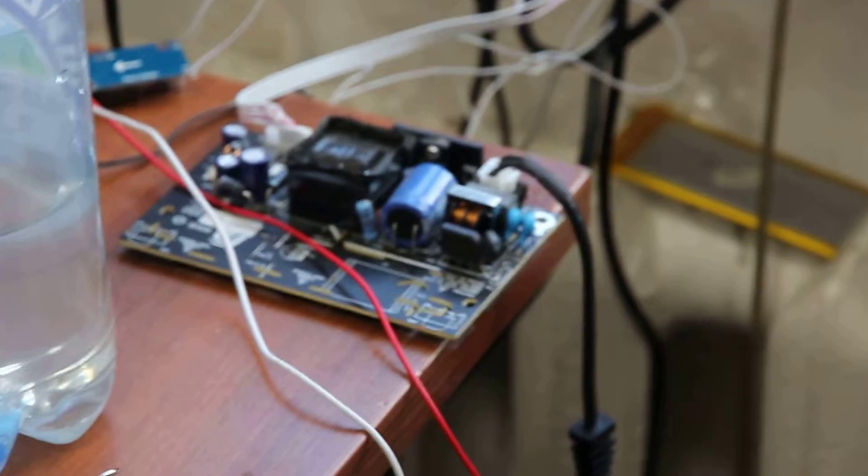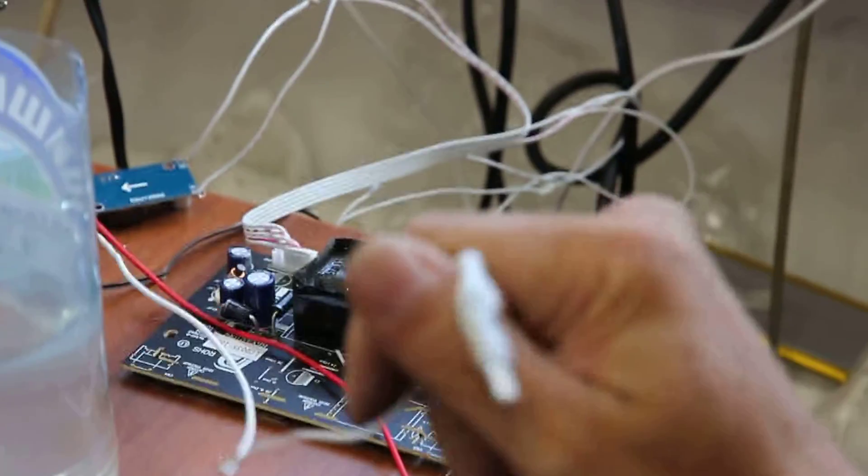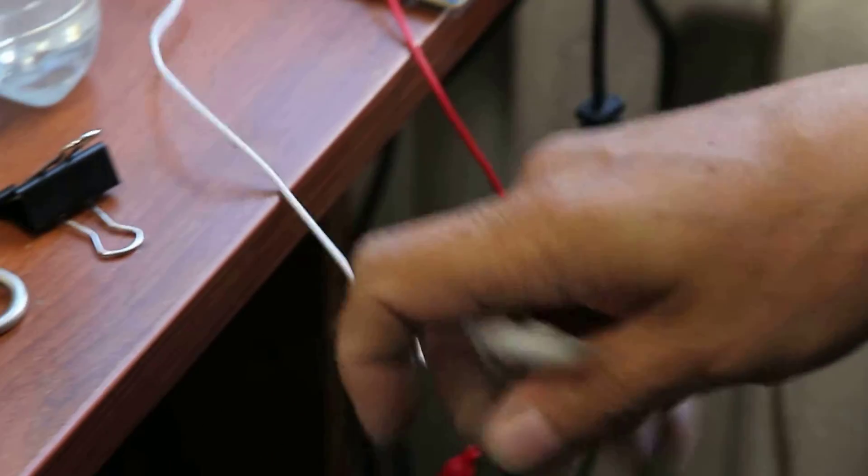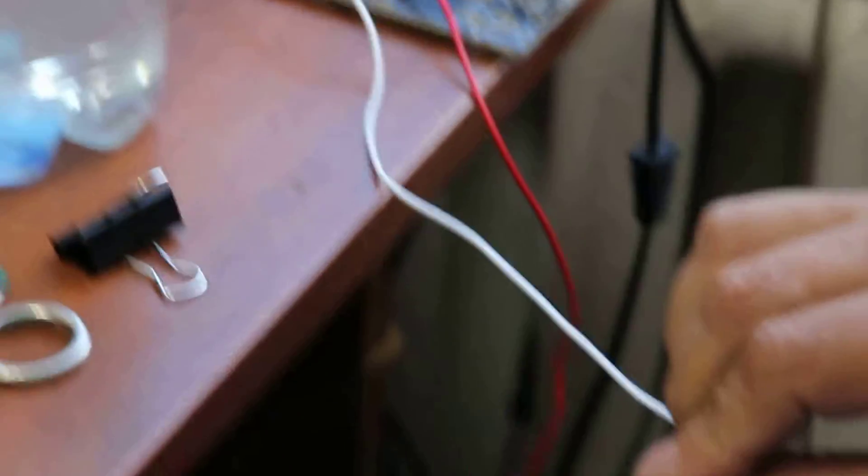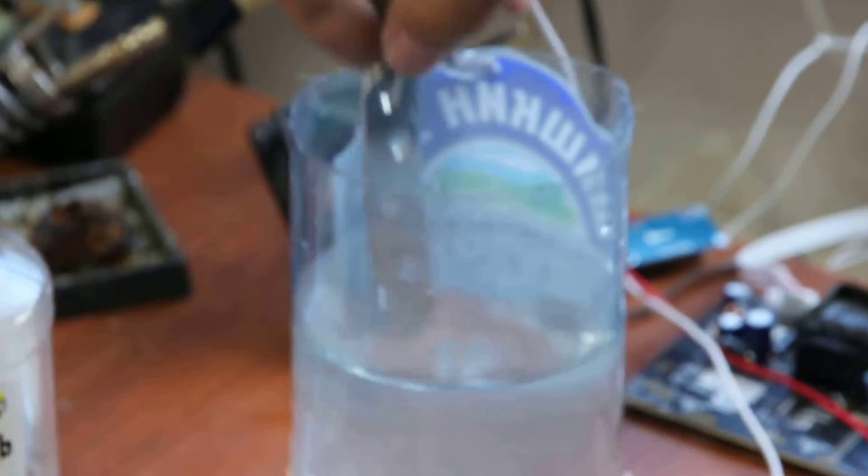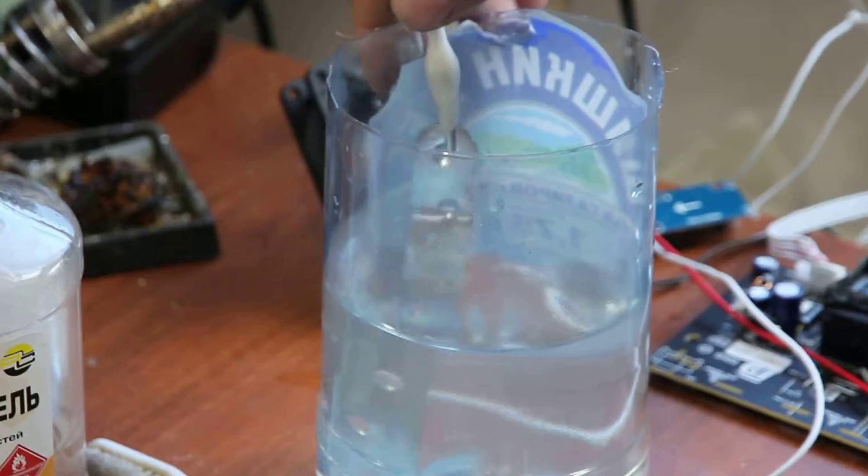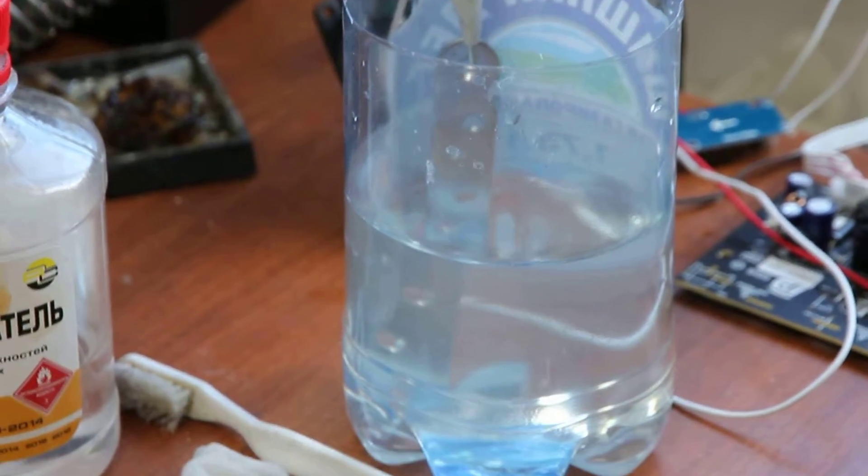Okay, now this is a power adapter from an average TV set. So we take the white wire and plug it to the electrode we made, our own electrode, and we put it into the water.